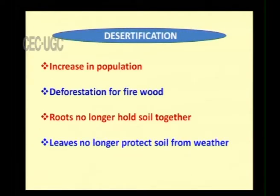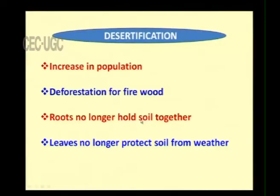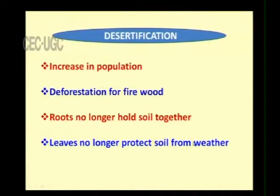Let us discuss the characteristics of desertification. On the human side, when population increases, people start deforesting for firewood. Roots no longer hold the soil together, and leaves no longer protect the soil from weather — they provided shade and reduced temperature. Without leaves, sunlight falls directly on the soil, and there is no protection. As a result, the loose top soil is blown away by wind.